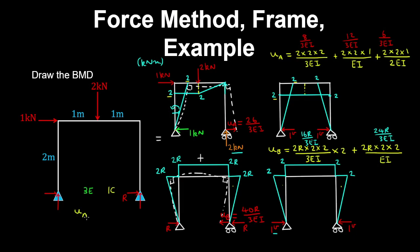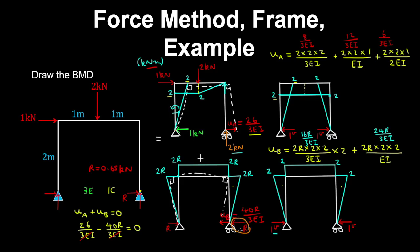Using our compatibility condition, UA plus UB equals zero, because there's no displacement at the pin. So we have 26/3EI minus 40R/3EI equals zero. These terms cancel, and solving this equation we get R equals 0.65 kilonewtons. Note that we took R as acting to the left, so this reaction points to the left. By horizontal force equilibrium, the reaction at the pin will also point to the left with a magnitude of 0.35 kilonewtons.